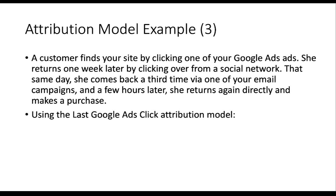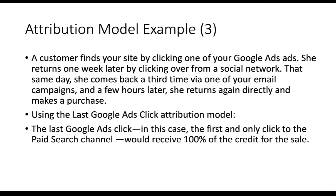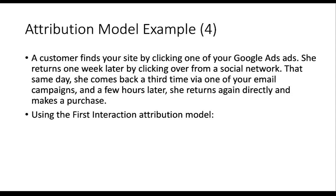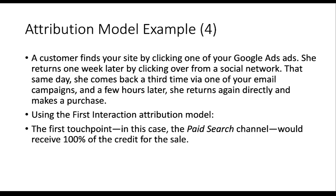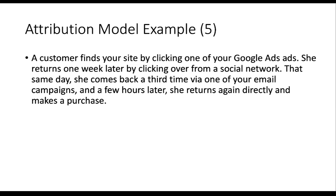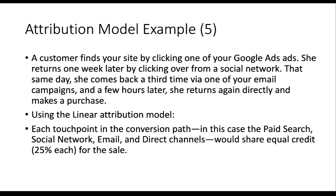Using the last Google Ads click model, you look for the most recent Google Ads interaction, which is the first touchpoint — the Google ad click — so paid search receives 100% of the credit. Using the first interaction model, the result is the same: paid search receives 100% of the credit. Using the linear attribution model, each of the four touchpoints receives an equal share: 100% ÷ 4 = 25% credit each.